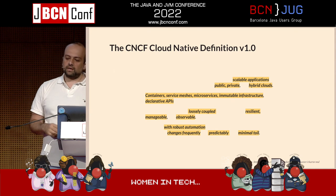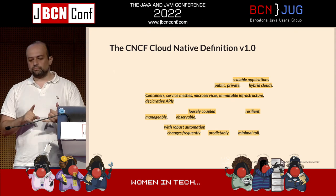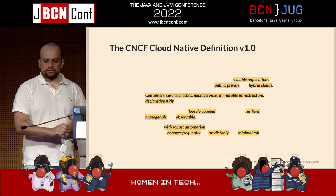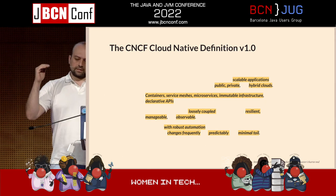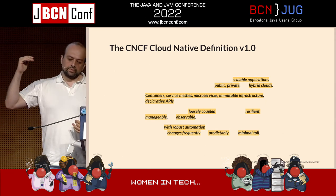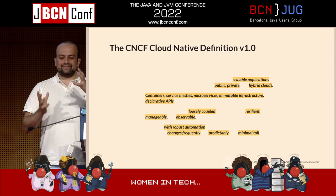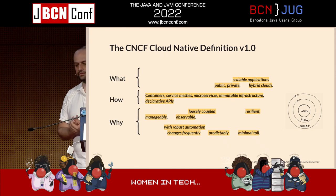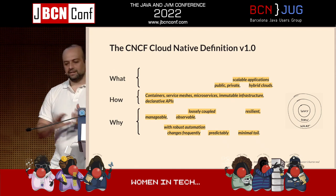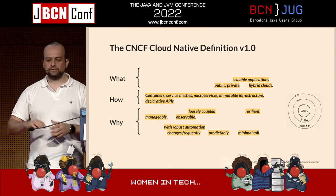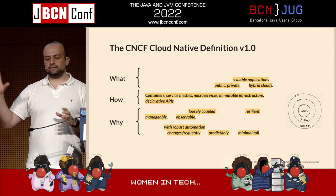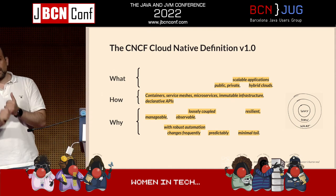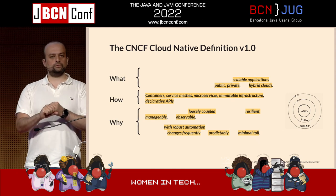What we're actually trying to do: we're trying to build scalable applications running on public, private, or hybrid clouds — containers, service meshes, all these kinds of things. And there are words like loosely coupled, resilient, manageable, observable. Now it makes a bit more sense. It's the same definition with filler words removed and important things highlighted. We've tried to separate out what you're trying to achieve, how you're going to do that, and why you want to do that.